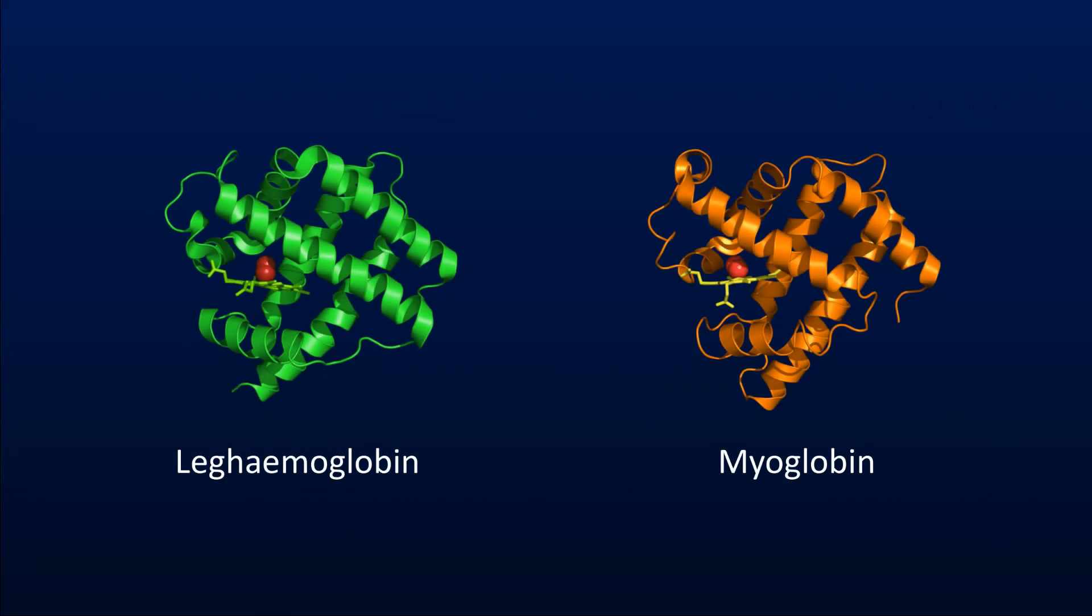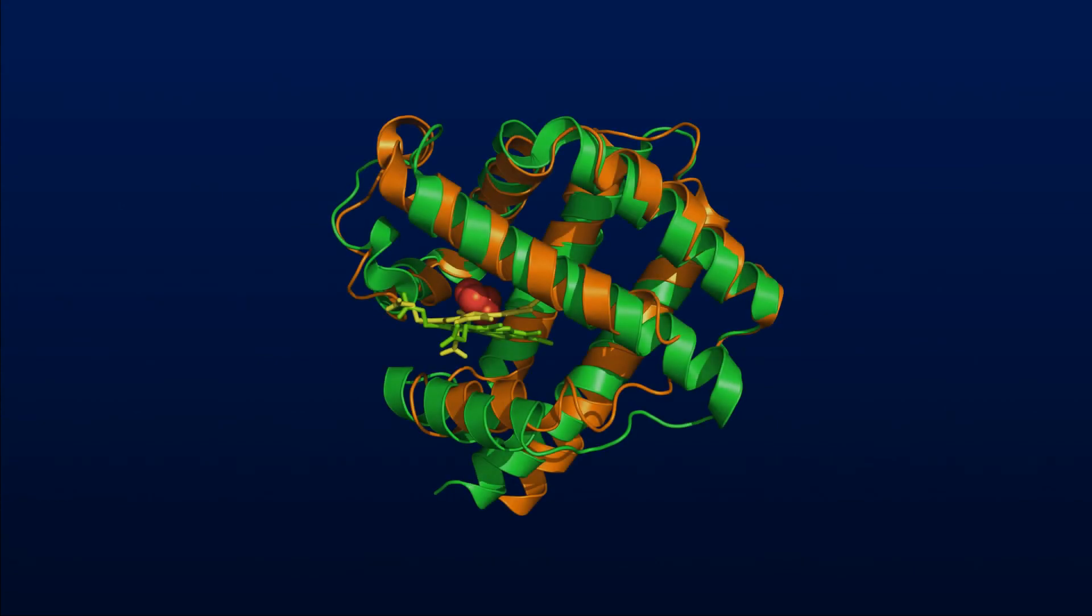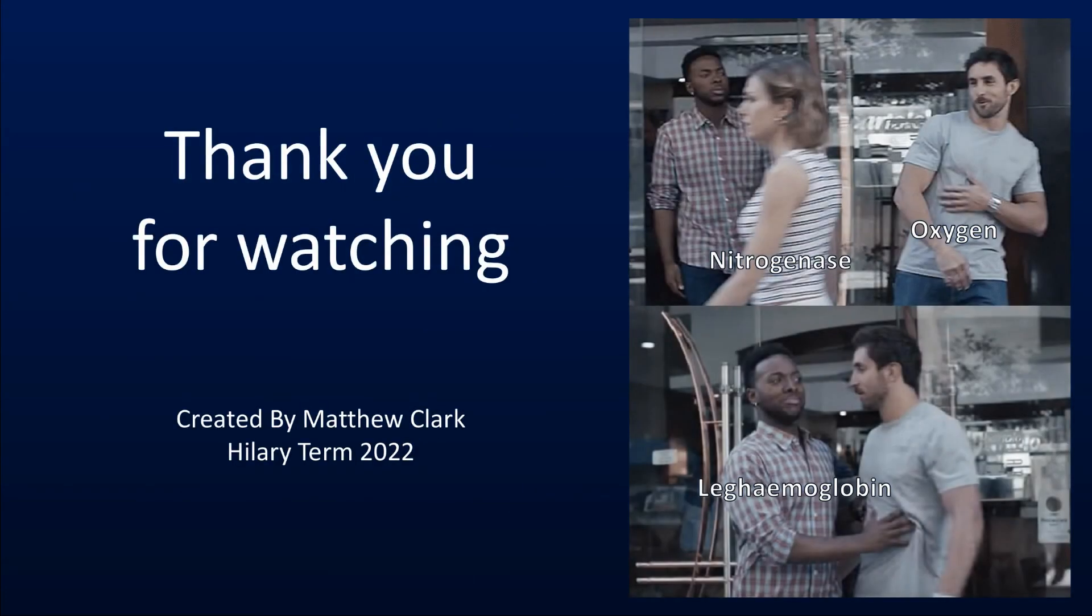One last cool fact. Legume plants secrete a protein into the nodules called leghemoglobin that binds strongly to any oxygen that may have slipped through the cracks and stops it from getting to nitrogenase. This protein is an evolutionary relative of hemoglobin and myoglobin proteins that us humans use to carry oxygen to actively respiring cells. Thank you for watching.